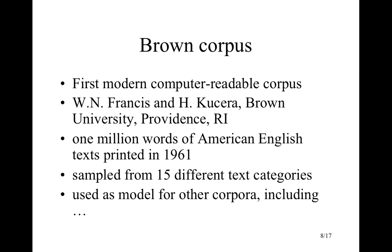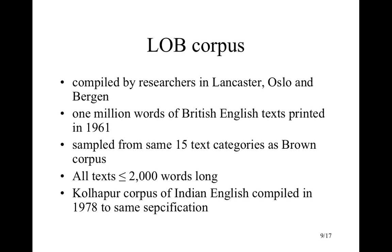One issue with the Brown Corpus is that it was collected in 1961 and wasn't then collected again in 1971, 1981, and so on. It now exists as a kind of historical record, although of course they could go through the same process and collect a new corpus in 2016. Then there's the Lancaster, Oslo, and Bergen corpus — the LOB corpus — a British English one, similar in many ways to Brown. There's also a corpus of Indian English that was very similar.